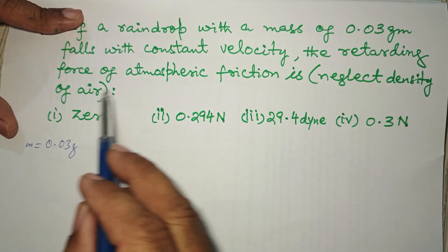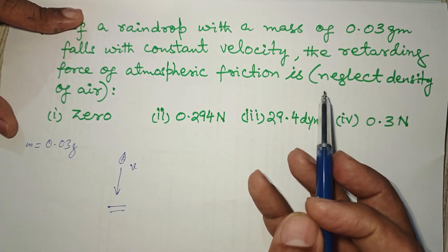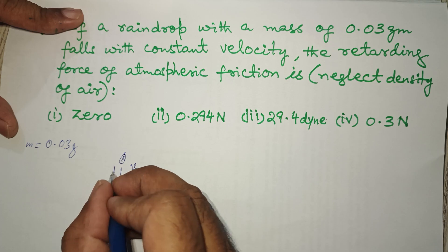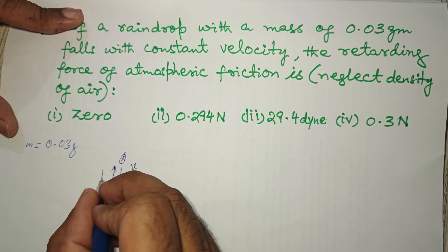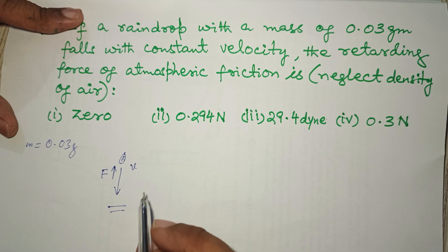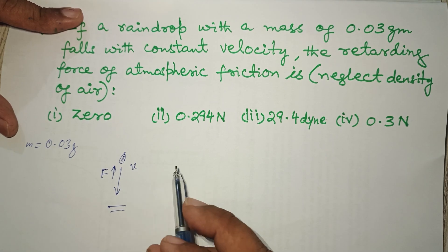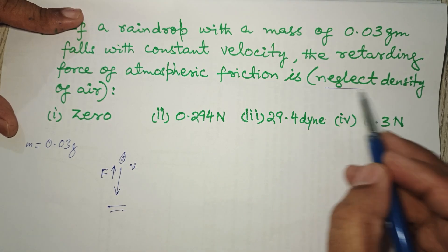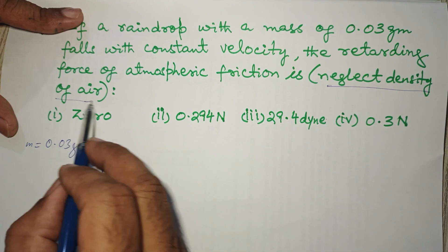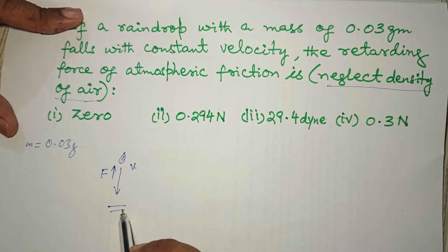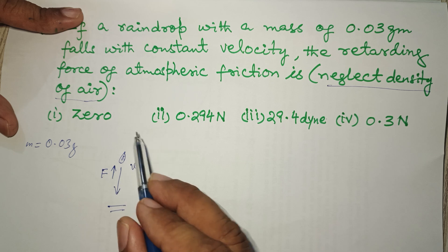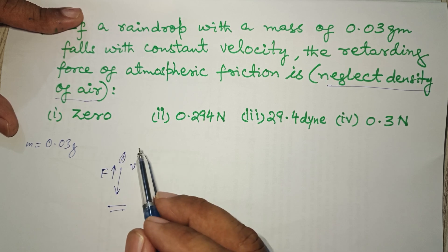We have to find out the retarding force which will act in the upward direction, in the opposite direction to the motion of the raindrop. We can neglect density of air, so then it becomes very easy.